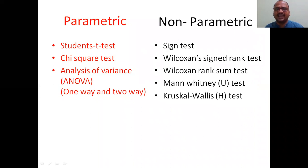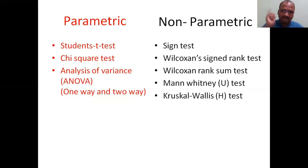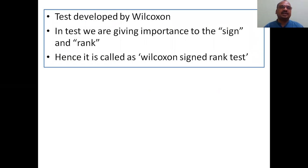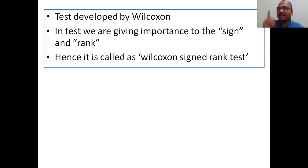The first non-parametric test is the sign test — only sign. Here, the Wilcoxon signed rank test has both sign and rank. It comes under non-parametric tests and is one of the hypothesis testing methods. This test was developed by the scientist Wilcoxon. In this test, we are giving importance to the sign and importance to the rank — hence it is called the Wilcoxon signed rank test.